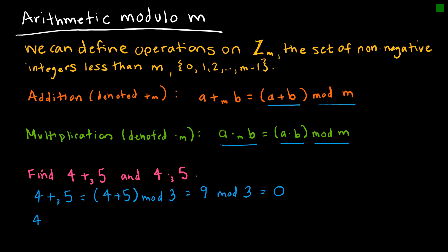For multiplication: 4 times 5 mod 3. We compute 4 times 5 equals 20, then find 20 mod 3. Taking 20 divided by 3, the remainder is 2. So 4 times 5 mod 3 equals 2.